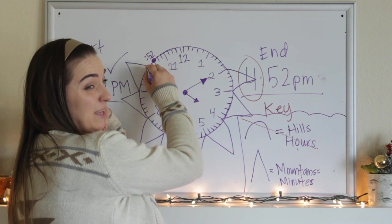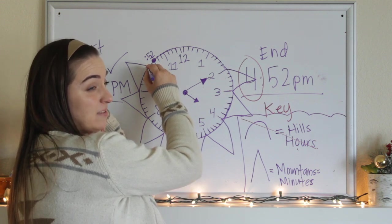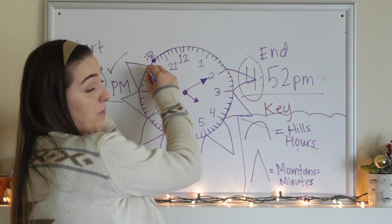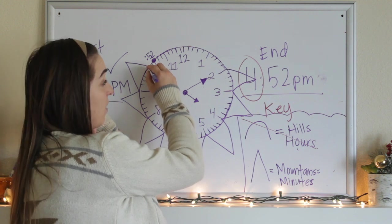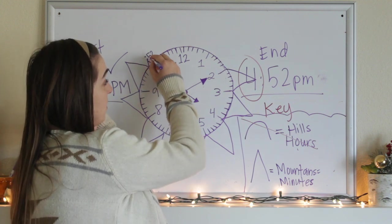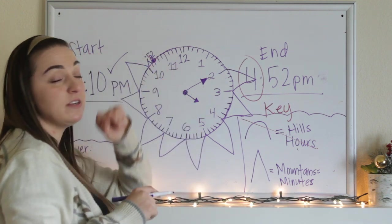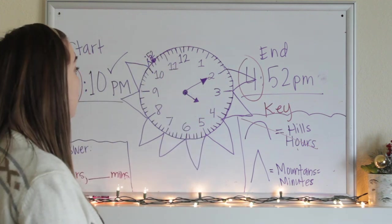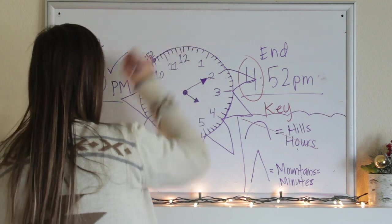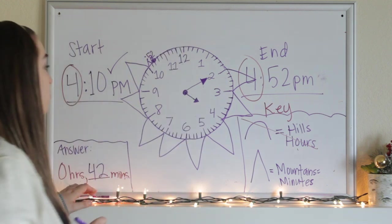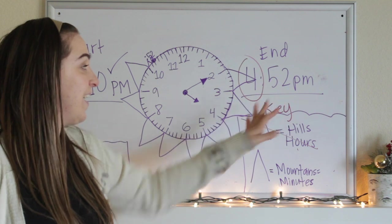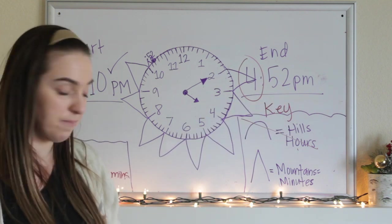So that doesn't mean that we keep counting by 5s. We have to count by 1s now. So we left off on 40 when we are counting by 5s. We're going to count 41 and 42 to get to where we put our big dot where 52 was. So we know that there are 42 minutes in between 4:10 and 4:52 PM.